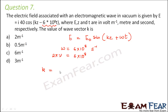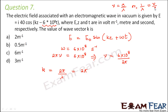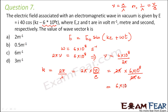The wave vector k is given by 2π/λ. We do not know λ directly, but from ω = 2πν, we get ν = 6 × 10⁸ / 2π. Since ν = c/λ, we have 1/λ = ν/c. Therefore, k = 2π × (ν/c) = 2π × (6 × 10⁸ / 2π) / (3 × 10⁸). The 2π cancels, giving k = 6 × 10⁸ / (3 × 10⁸) = 2 meter inverse. That is option A.